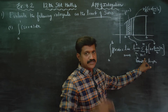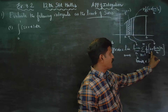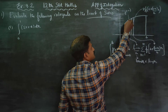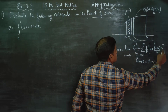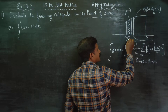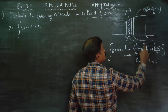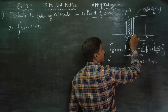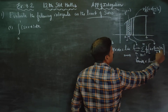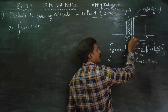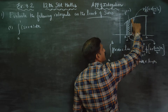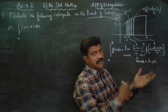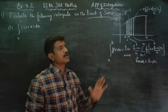When r equals 1, f of (a + (b minus a)/n) gives the height of the first rectangle. When r equals 2, we get the height of the second rectangle. When r equals 3, we get the height of the third. Length into breadth gives the area of each rectangle, and sigma adds them all up to give the total area of the diagram.